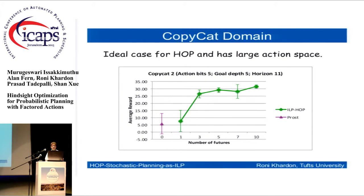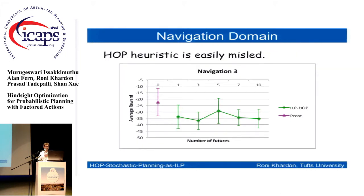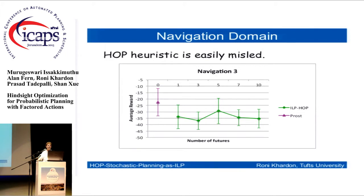Copycat is our handcrafted domain — it's no surprise we do very well there. The reason PROST doesn't do well here is that, like in the previous talk, it enumerates all actions. With a very large action space it cannot even try all actions and cannot succeed. That's the main point about scaling in this paper — we want to scale to large action spaces. Another domain we pass through quickly is the navigation domain from IPPC, where there are dangerous actions but if you pretend you know the future you think they're not dangerous. That's a place where the hindsight heuristic is very bad, and you can see our system doesn't do well there. The hindsight heuristic needs to be a reasonable heuristic for the domain.